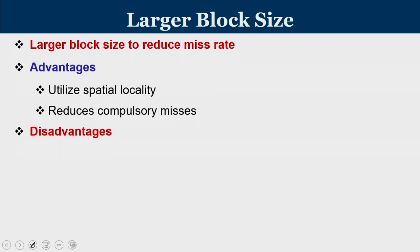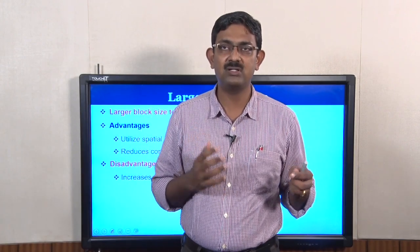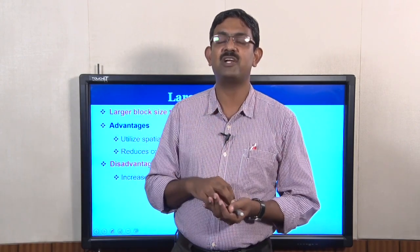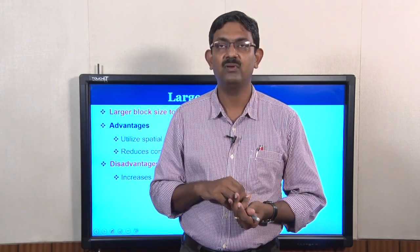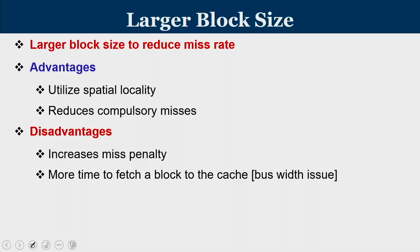However, increasing block size also increases miss penalty. Previously we had to bring only 16 words, one word at a time, taking 16 consecutive bus cycles. When block size is doubled to 32 words, it takes more time to fill a cache block, so miss penalty increases. You require more time to fetch a block to the cache — it is basically a bus width issue.